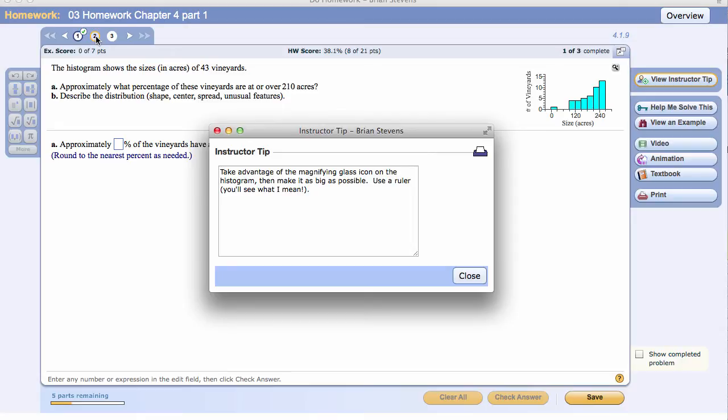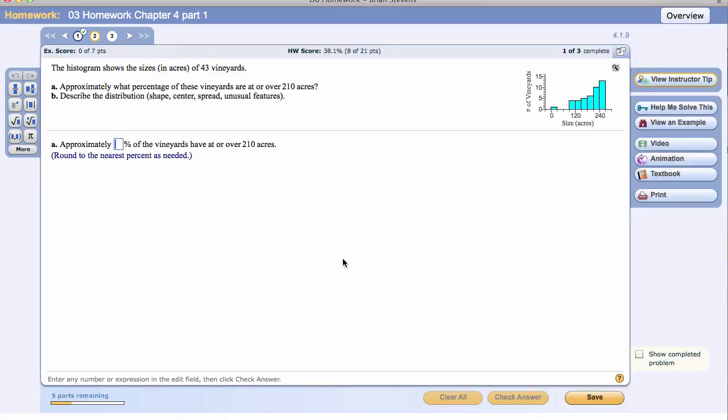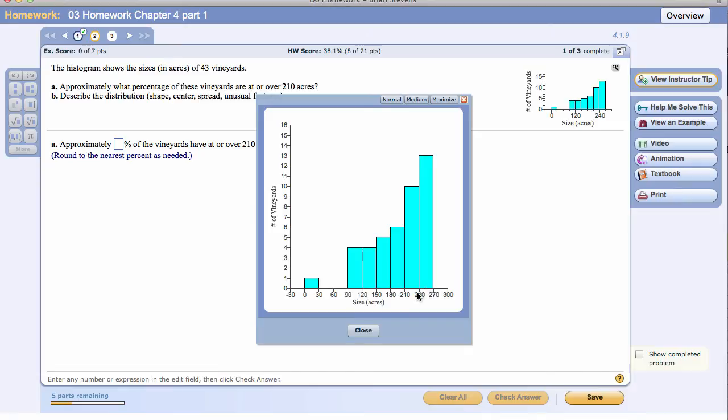For this problem, use the same technique I've previously been using. Approximately what percent of these vineyards are at or over 210 acres? Now for this problem right here, let's zoom in again. Here is 210. And be very careful. We see this goes across right here. There's 10 in this bin. And then there's 13 in this one. If you notice, these are the ones with more than 210.